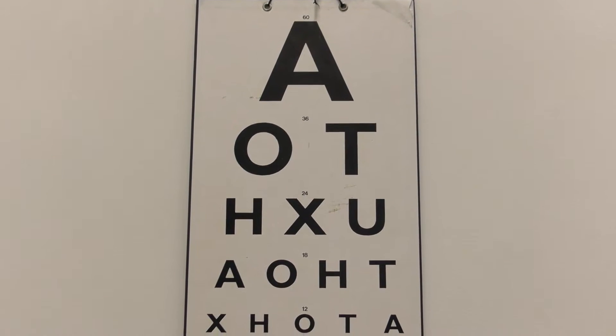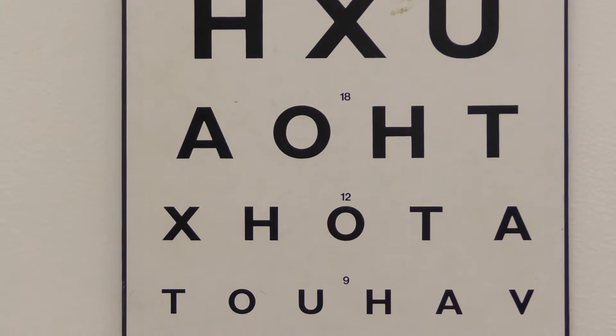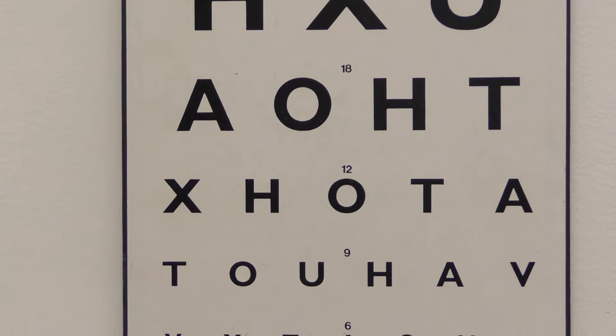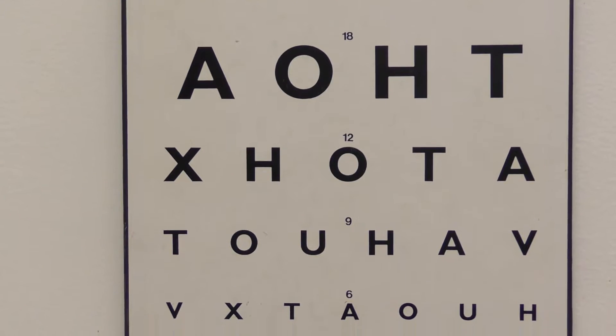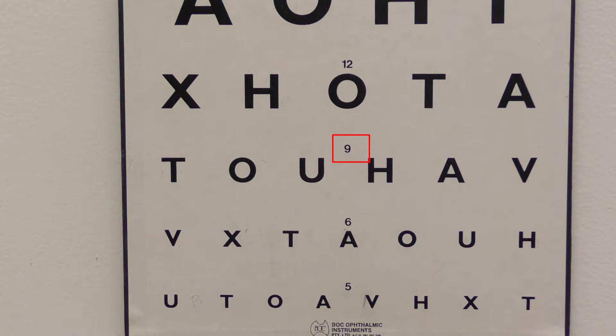On the Snellen chart you'll see rows of letters and each row is a different size. The small number associated with each of the rows is the distance in meters at which a normal sighted person can read that line.